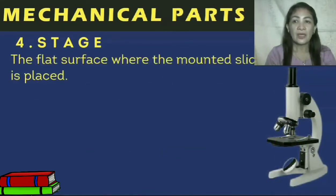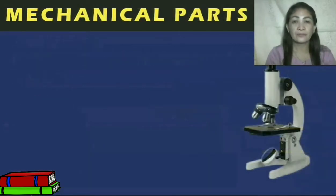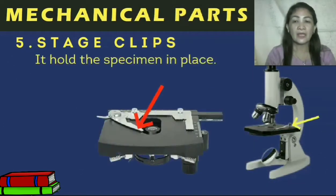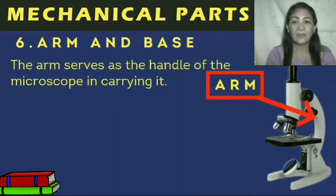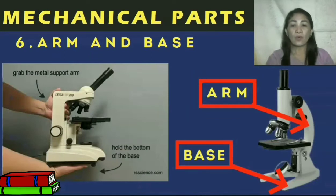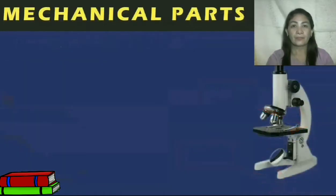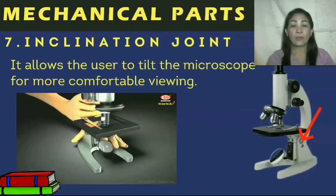Four, stage — it is the flat surface where the mounted slide is placed. A slide is where the specimen is placed for observation. Five, stage clips — they hold the specimen in place. Six, arm and base — the arm serves as the handle of the microscope for carrying it, and the base serves as the support of the whole microscope. When transferring the microscope from one place to another, we use both hands to hold the arm and the base. Seven, inclination joint — it allows the user to tilt the microscope for more comfortable viewing, especially when in a sitting position.